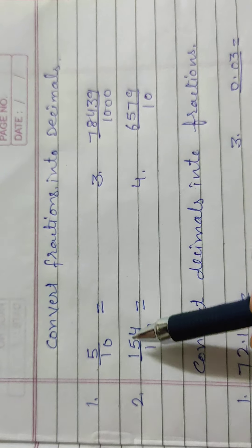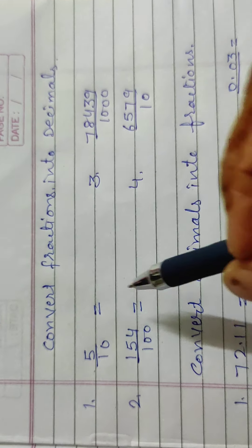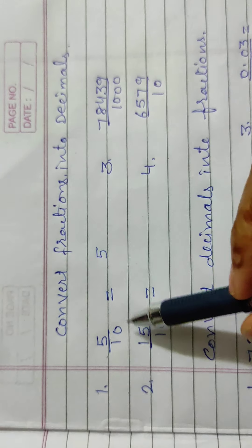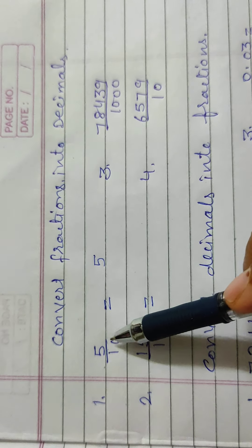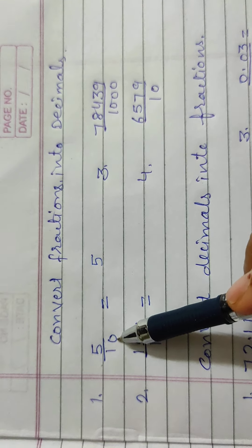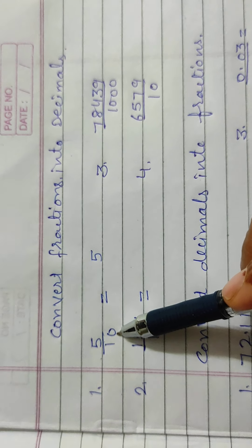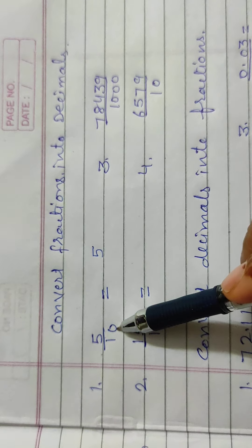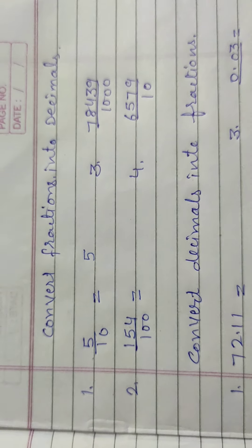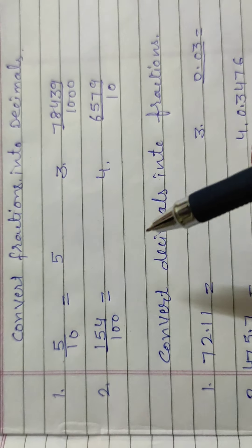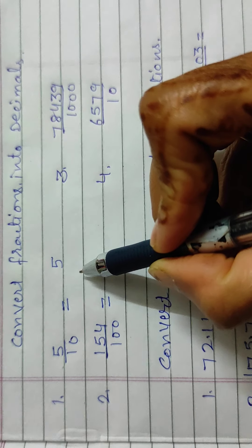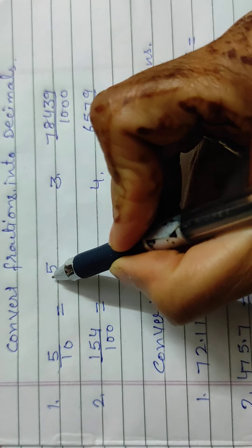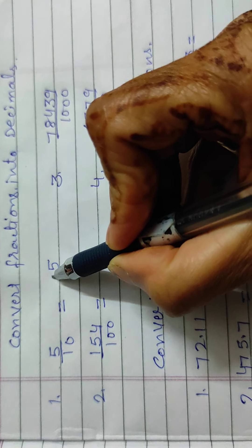First of all, write the numerator. Write here 5. After that you have to check the denominator. Here the denominator is 10. In 10 there is 1 zero. So insert decimal after 1 digit. This is your 1 digit, so write here the decimal.